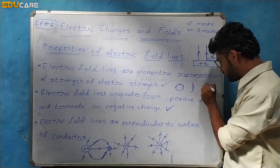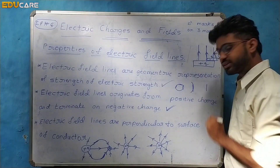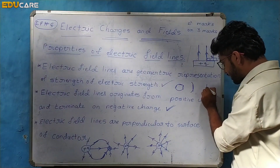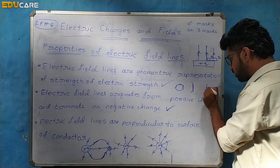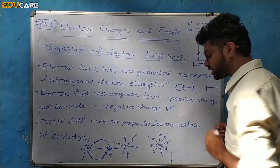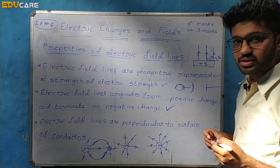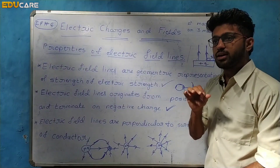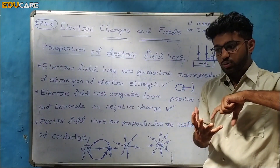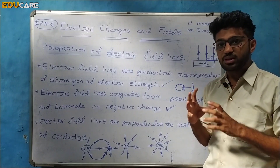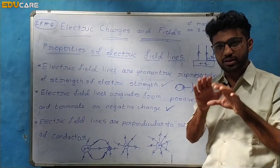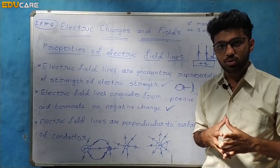The electric field lines are straight and perpendicular to this particular surface. They are not at any other angle — they must be perpendicular. This applies whether the conductor has a flat or spherical shape.